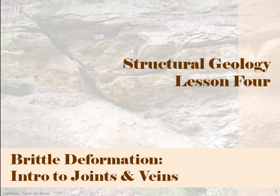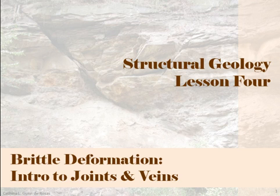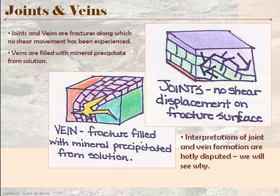Here in this fourth lesson on structural geology, we're going to talk about joints and veins — an introduction to morphology and terminology. This is a brittle deformation type. Joints are natural fractures along which no shear displacement has taken place, so the rock breaks but does not move relative to each other along the fracture plane. Veins are filled with mineral precipitate from water solution as water travels through these fracture areas. The interpretations of exactly how these form and under what circumstances are kind of up for grabs — there's a lot of debate in the field about it.